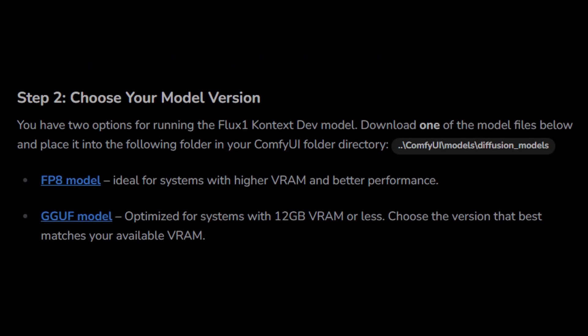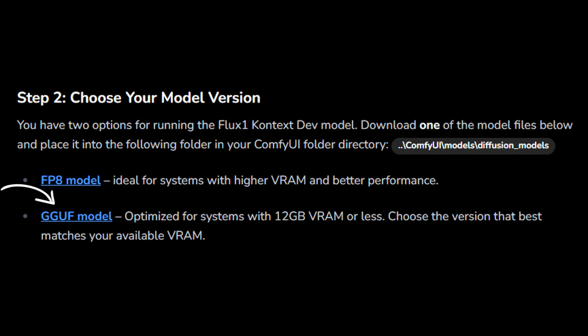Step 2: Choose your model version. You have two options for running the Flux 1 Context Dev model. Download one of the model files listed in our written article and place it into the ComfyUI/models/diffusion_models folder in your ComfyUI directory. Which one should you choose? The FP8 model is best for systems with higher VRAM and offers better performance. The GGUF model is optimized for systems with 12 GB VRAM or less. Select the version that best fits your available VRAM.